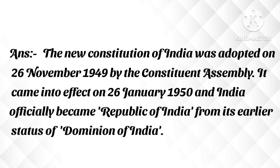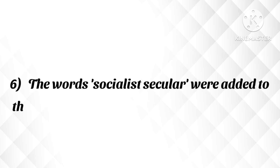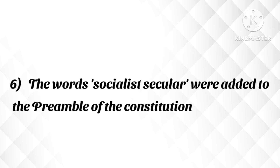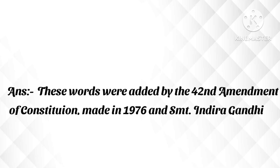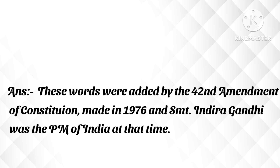Question: The words 'socialist' and 'secular' were added to the Preamble of the Constitution by which amendment? Answer: These words were added by the 42nd Amendment of the Constitution, made in 1976, and Srimati Indira Gandhi was the Prime Minister of India at that time.